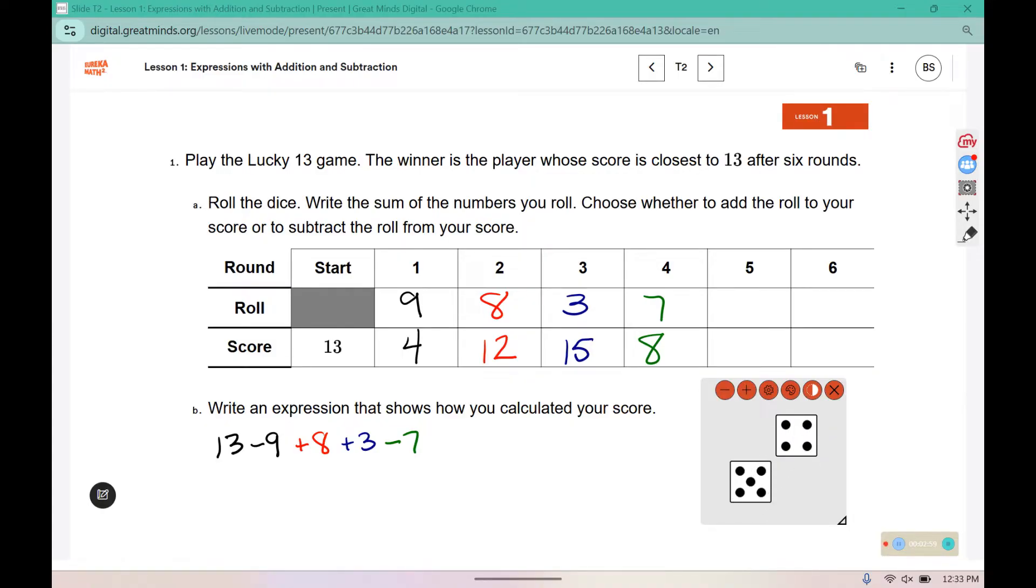Now I have nine. I'm going to add nine since I'm below thirteen now. Eight plus nine is seventeen. And now I have seven. Four plus three is seven, so I'm going to subtract seven to get closer to thirteen. Seventeen minus seven is ten.